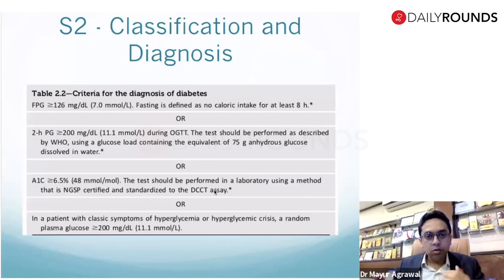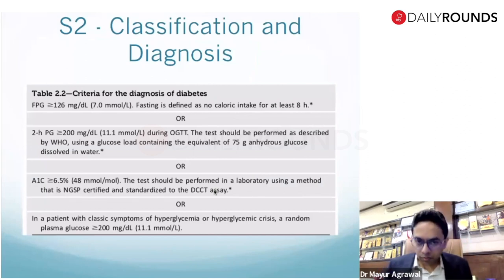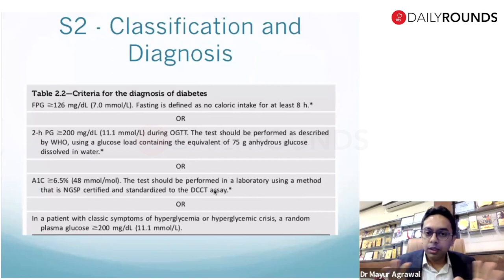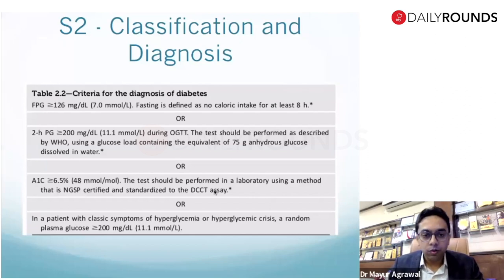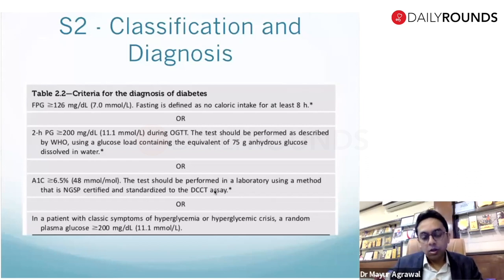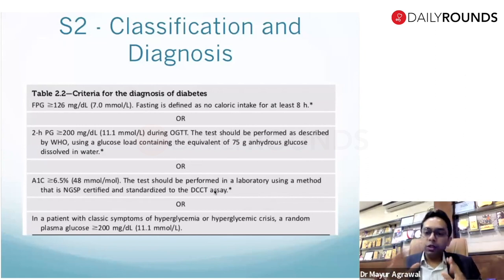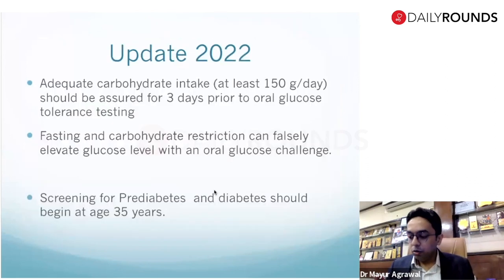There are various sections. Section 2 is about classification and diagnosis. The diagnosis criteria remain the same — there are three parameters: fasting more than 126 mg/dL, defined as eight hours of fasting; post two-hour plasma glucose more than 200 mg/dL; or any random glucose with symptoms. HbA1c more than 6.5% is also diagnostic, and that should be from an NGSP-certified lab.